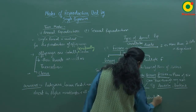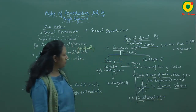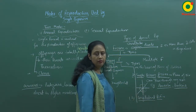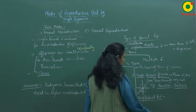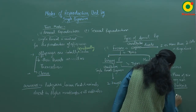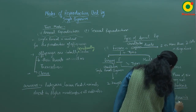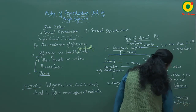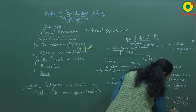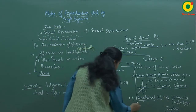The second type is longitudinal binary fission. In this type, the plane of division passes through the longitudinal axis. This type of binary fission is found in Leishmania, which is a parasite that causes the disease kala-azar.